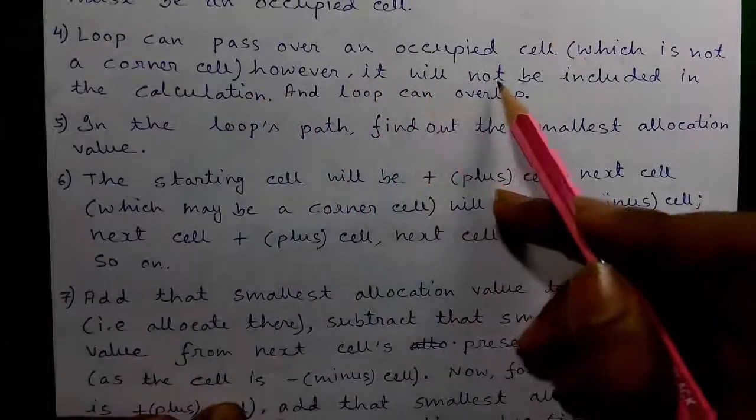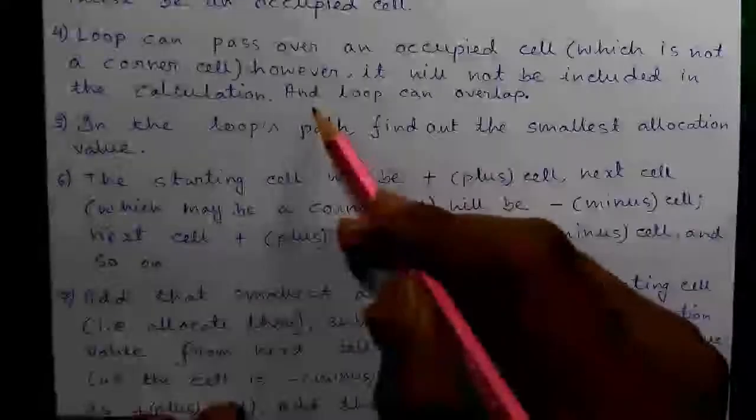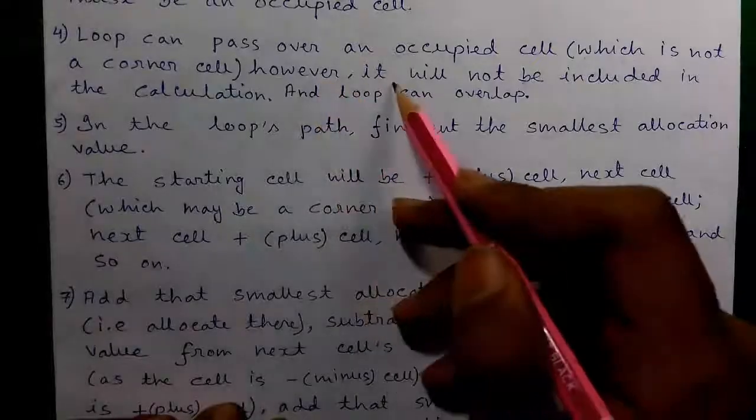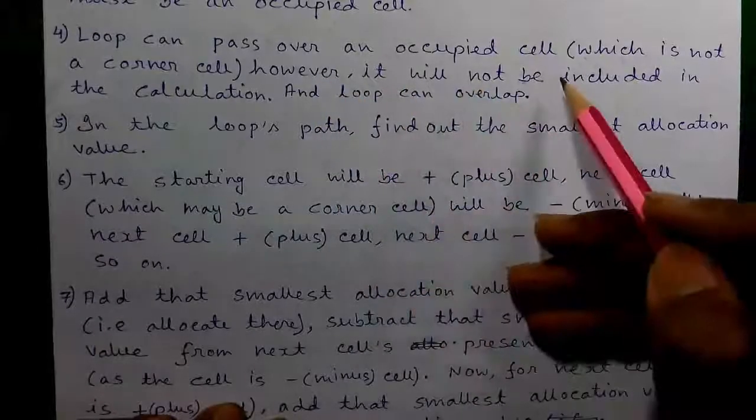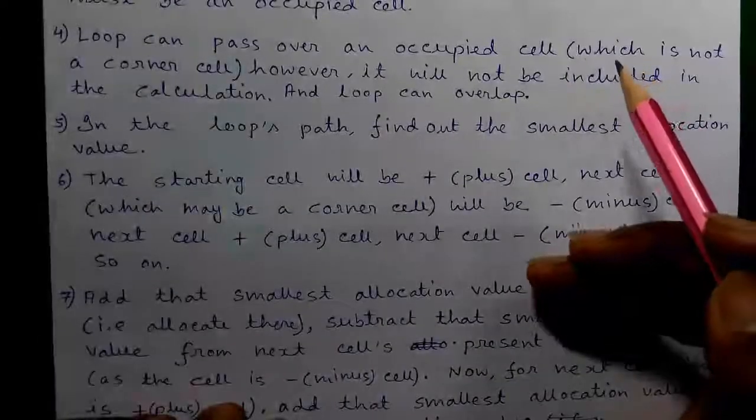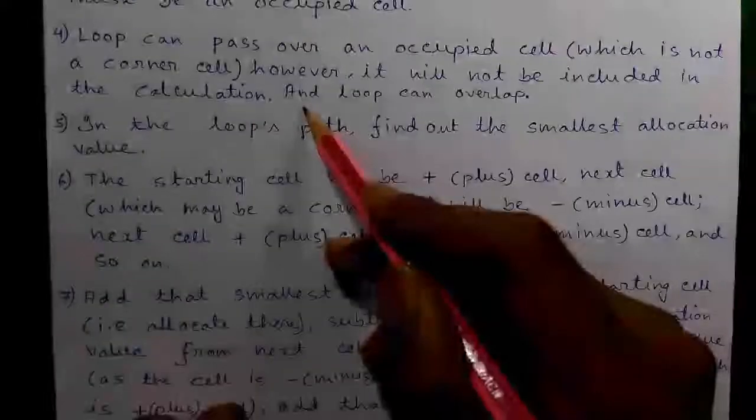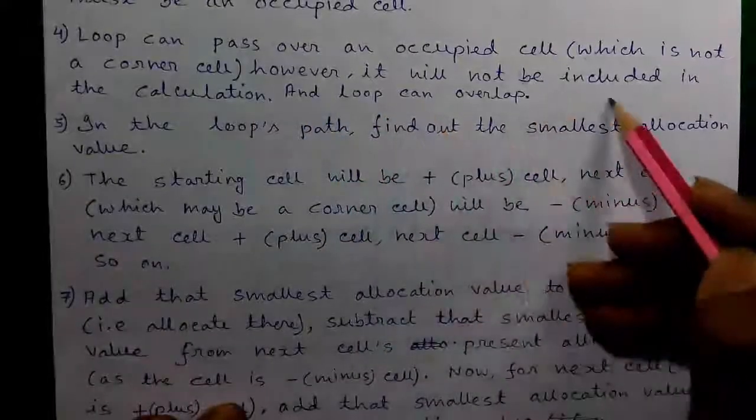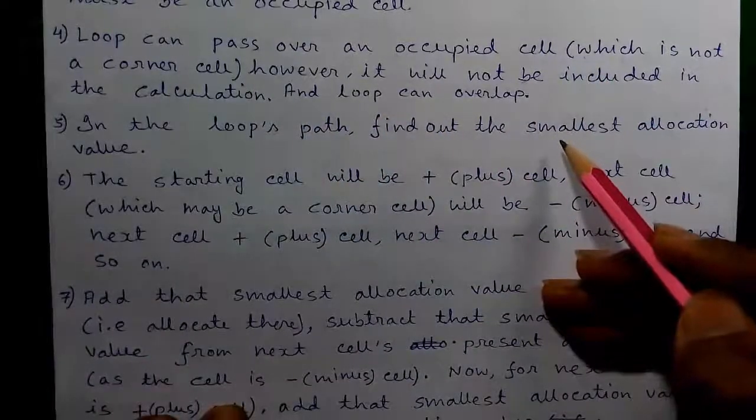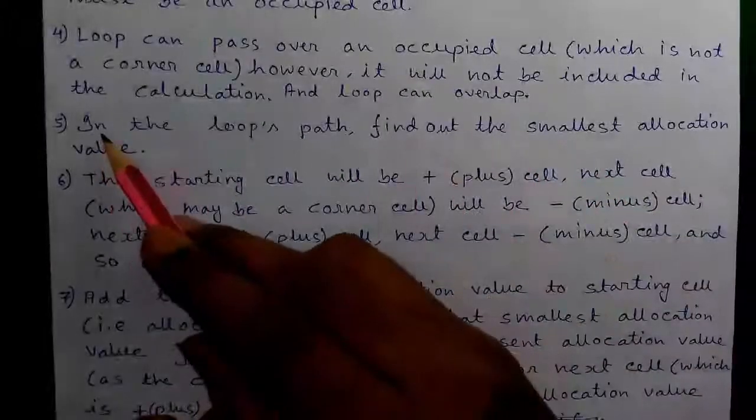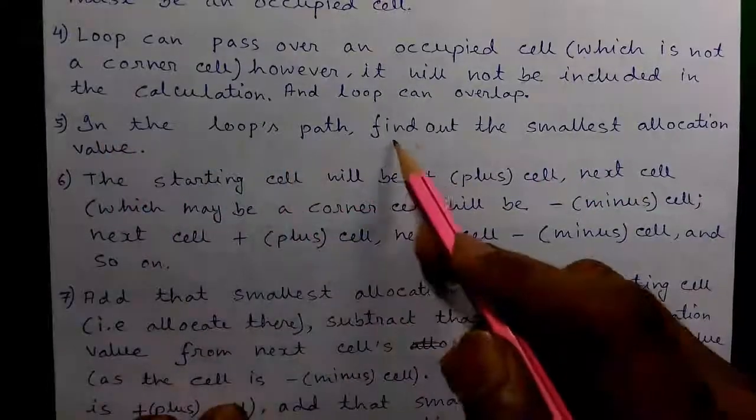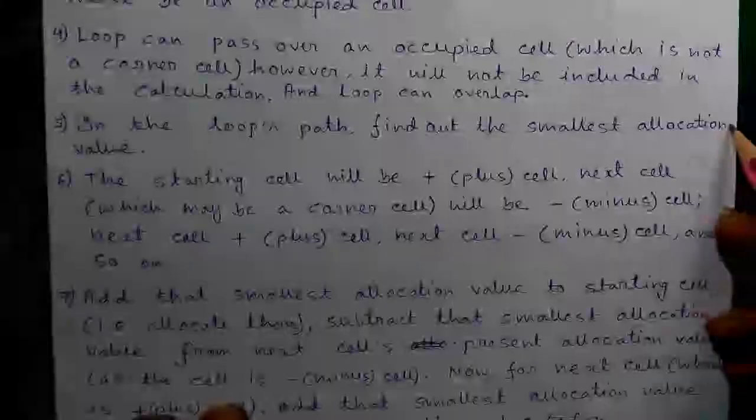Rule 4 - The loop can pass over an occupied cell which is not a corner cell. However, it will not be included in the calculation. That cell which is not a corner cell but through which the loop has passed will not be included. And remember, loop can overlap.